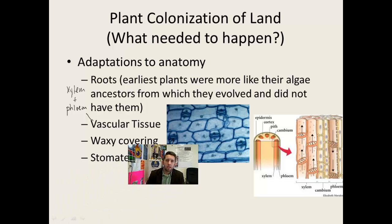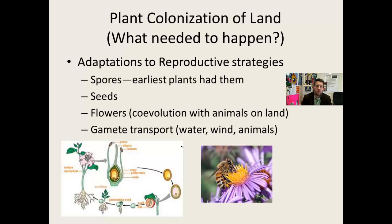Reproductively, there were some strategies they were employing, such as spores. The earliest plants had them — spores are single-cellular and can become an entire new individual. Sometimes seeds are more efficient, so plants moved to seeds. Flowers are even more so. You can see the evolution of flowers right along with the evolution of animals. As there were more animals, there were more methods of movement for pollen — pollinators. If you have insects, you have ways to move your pollen to other plants.